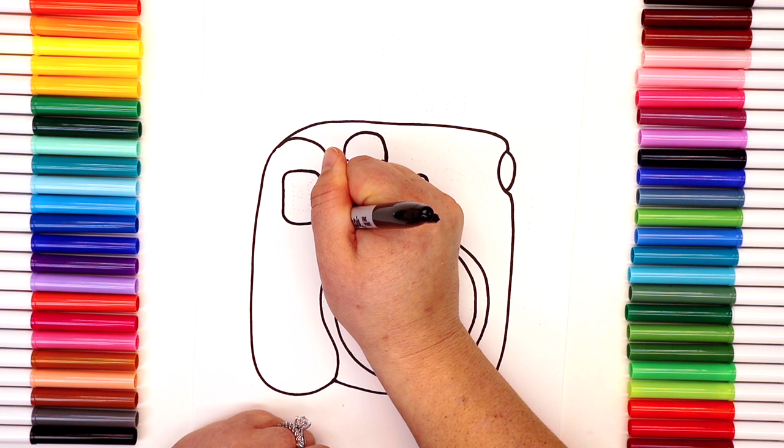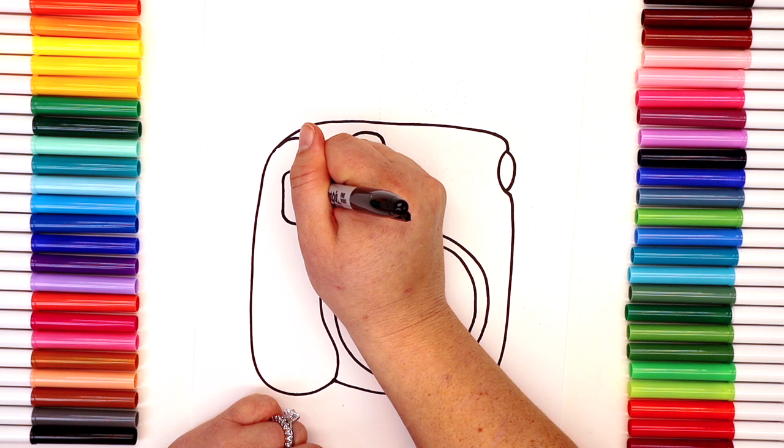We want this to look like it's a tunnel because we're looking through it, right? So let's draw another shape on the inside and connect all the corners. Do you see how that works? It looks 3D.